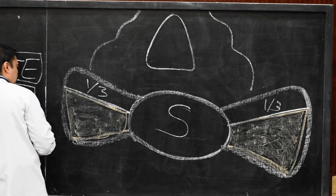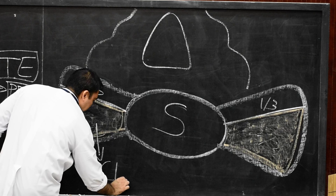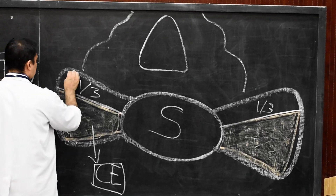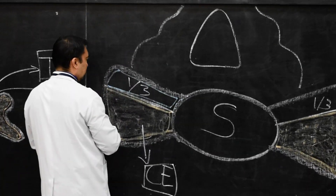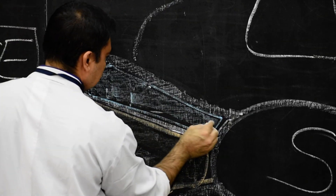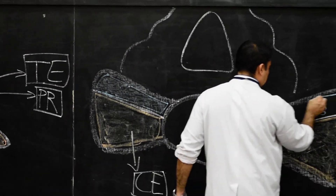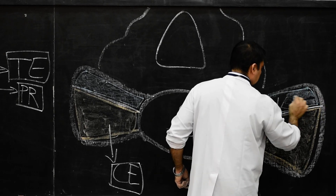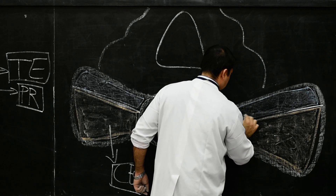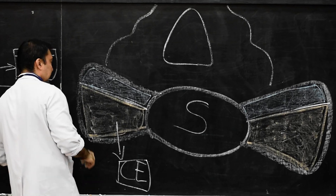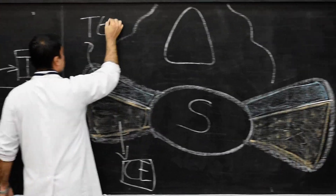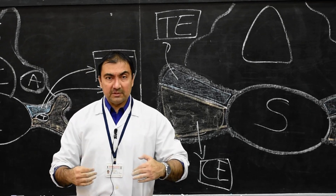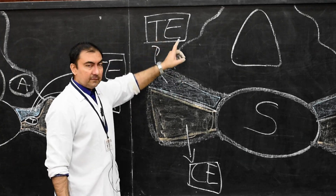Anterior two-thirds is developed from the costal element. And the posterior one-third, if I complete it with a blue color, this posterior one-third of the lateral mass or Ella of the sacrum will be developed from the transverse element. Lateral mass or Ella of the sacrum: anterior two-thirds develops from the costal element, posterior one-third develops from the transverse element.